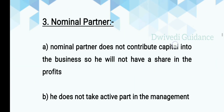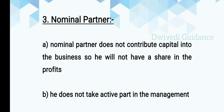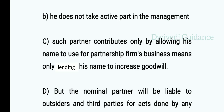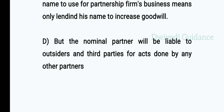Next, we'll see the nominal partner. A nominal partner does not contribute capital into the business, so he will not have a share in the profit. He does not take an active part in the management. Such a partner contributes only by allowing his name to be used for the partnership firm — lending his name to increase the goodwill. However, the nominal partner will be liable to outsiders and third parties for acts done by any other partner, because third parties know him as a partner and have no information that he is only a nominal partner.